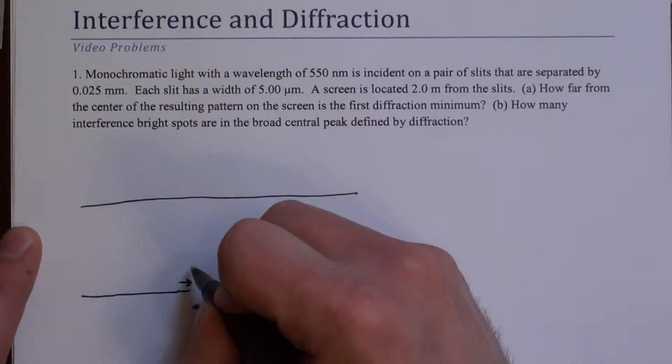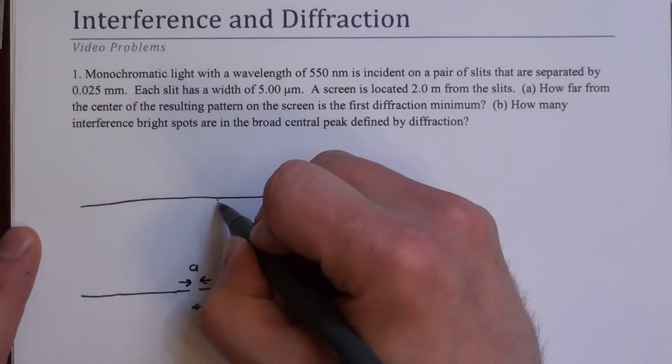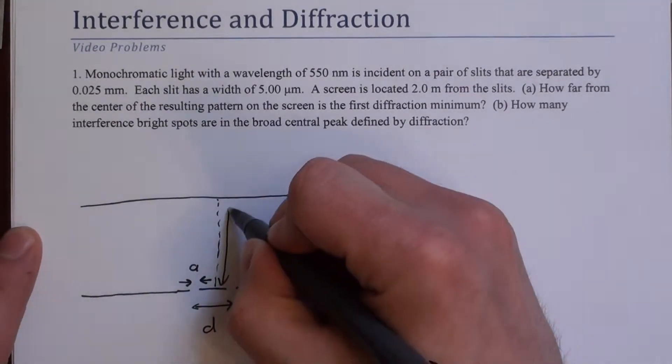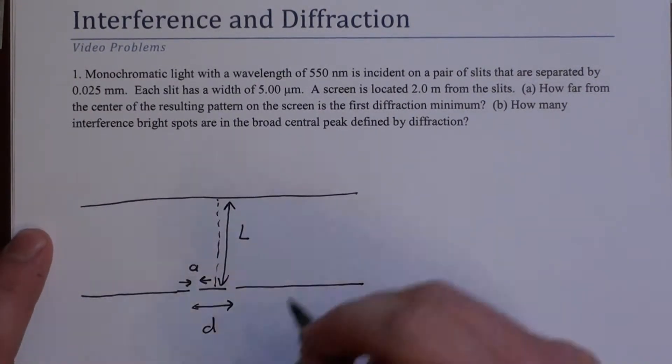It's the slit separation, and a here is the slit width. And this screen is, we'll call it a distance L away. So let's label those quickly.